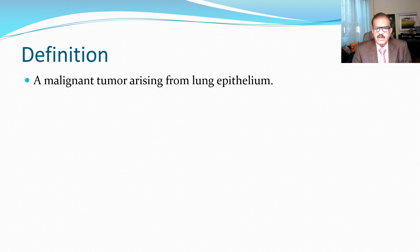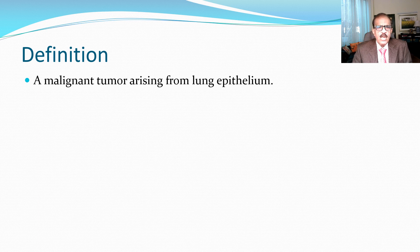It is a vague term but it could be the mucosa of main airways or small airways. It does not refer to other structures of the lung like cartilage, connective tissue, or lymphoid tissue — those tumors have separate names. If there is a malignancy arising from the mucosa of the airways, that is called lung cancer, or previously bronchogenic carcinoma or bronchial carcinoma. Either term can be used.